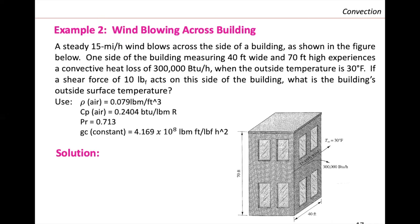We are also given the density, the CP, the Prandtl and the GC constant in English units. Since this is a problem with the Chilton-Colburn analogy — how do we know to use Chilton-Colburn? The Prandtl is equal to 0.713, which is within the range of the Chilton-Colburn. Remember the Reynolds analogy is used when the Prandtl equals one. We are also given the shear force. When we calculate the convective heat transfer coefficient from the shear force, we use either analogy, and here we narrow to Chilton-Colburn because of the Prandtl.